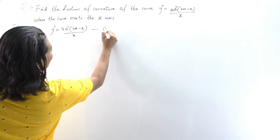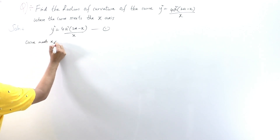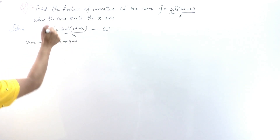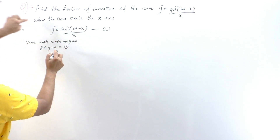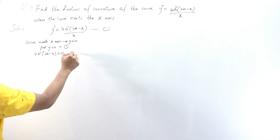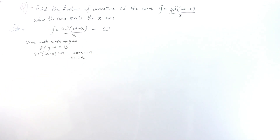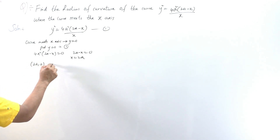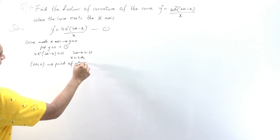Putting y = 0 into the equation, the left side becomes 0, giving 4a²(2a - x) = 0, so 2a - x = 0, meaning x = 2a. Therefore, for y = 0 we have x = 2a, and the point of intersection is (2a, 0).